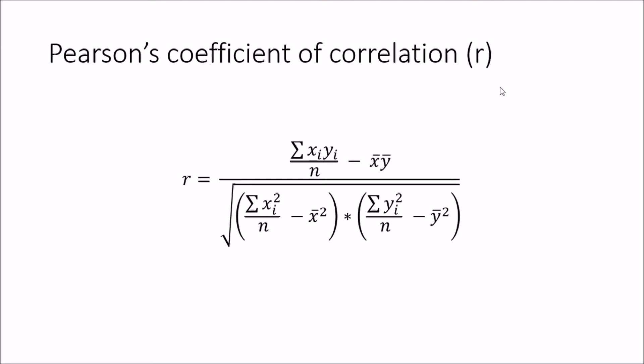This equation is called Pearson's coefficient of correlation, which is denoted by r. This equation might look daunting but it's not. It's somewhat similar to the standard deviation equation. If you look at this part of the equation, this is the same thing you get with the standard deviation of the x variable, and in this part you get the standard deviation of the y variable, and this part gives the deviations of x and y variables taken together.